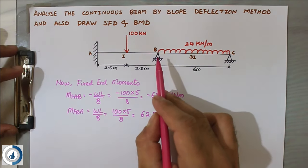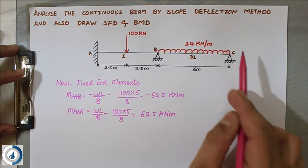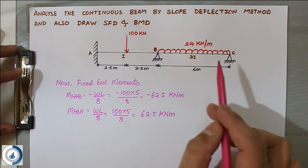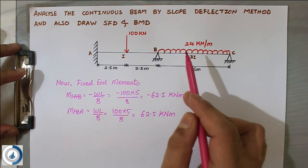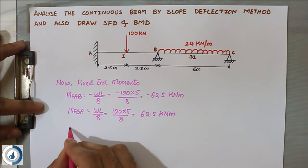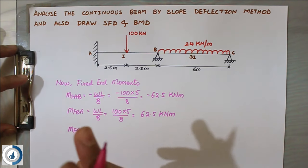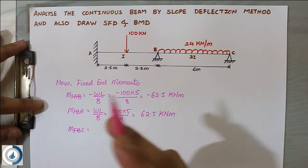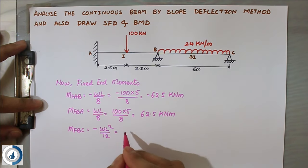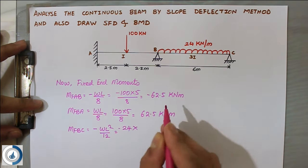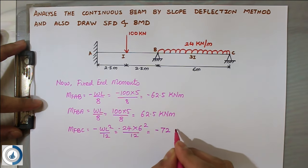For span BC, the loading is UDL with intensity 24 kN/m, so the formula is WL² ÷ 12. MFBC is anti-clockwise, so it is negative: minus 24 × 6² ÷ 12 = minus 72 kNm.